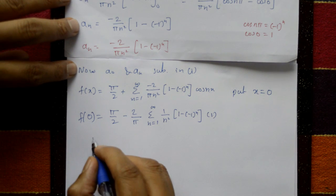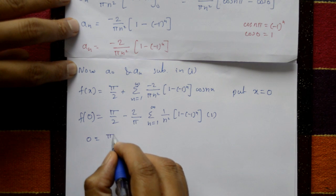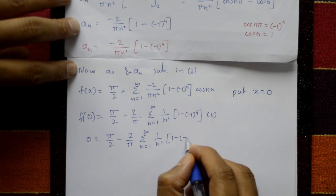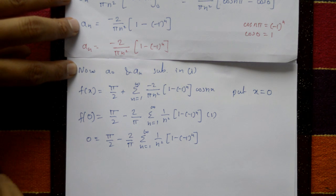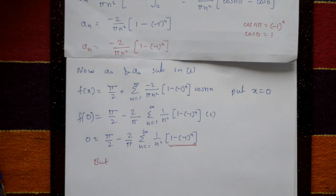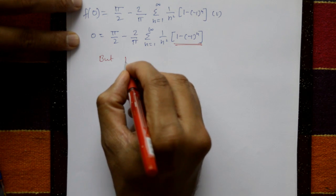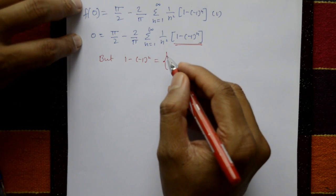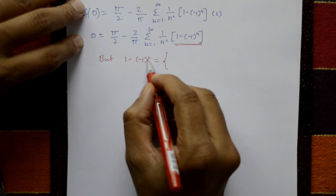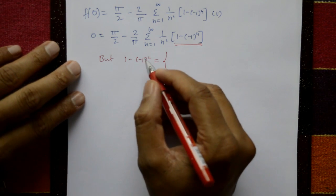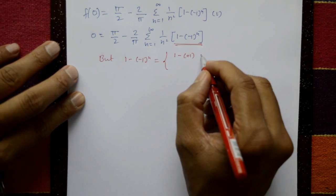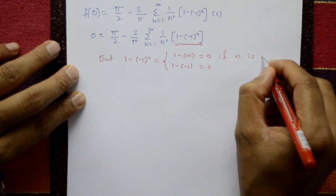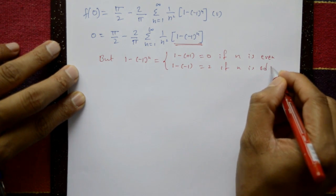So: 0 = π/2 − (2/π) × summation n=1 to infinity of (1/n²)(1 − (−1)ⁿ). Now for (1 − (−1)ⁿ): when n is even, (−1)ⁿ = +1, so 1 − 1 = 0; when n is odd, (−1)ⁿ = −1, so 1 − (−1) = 2.